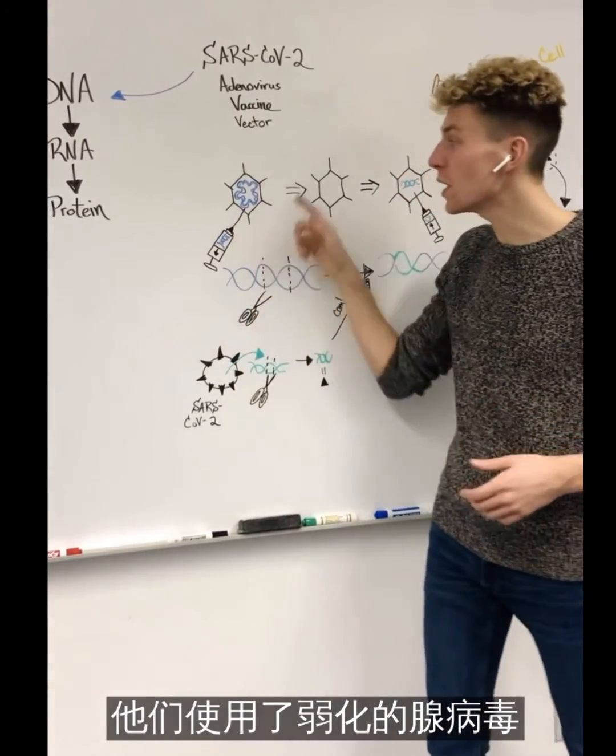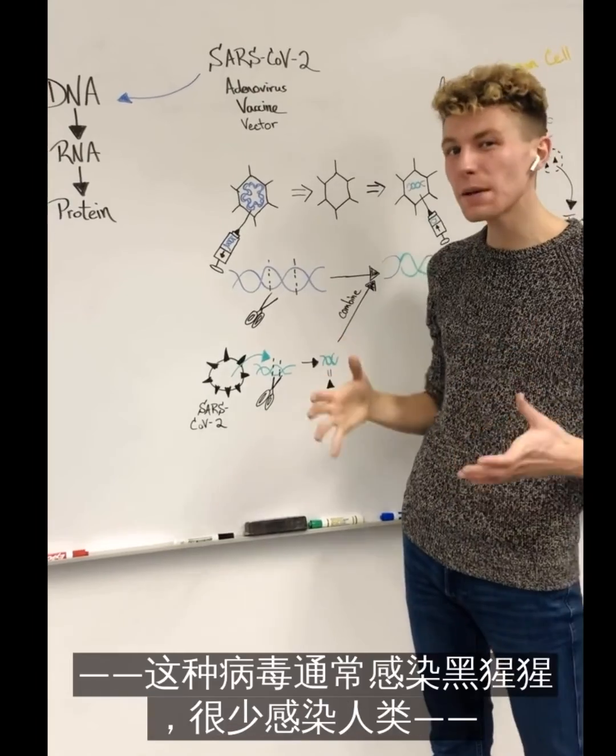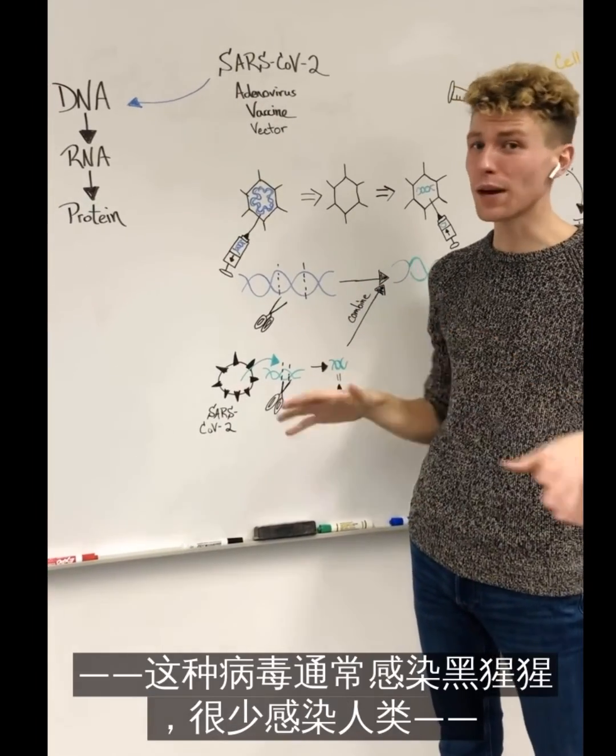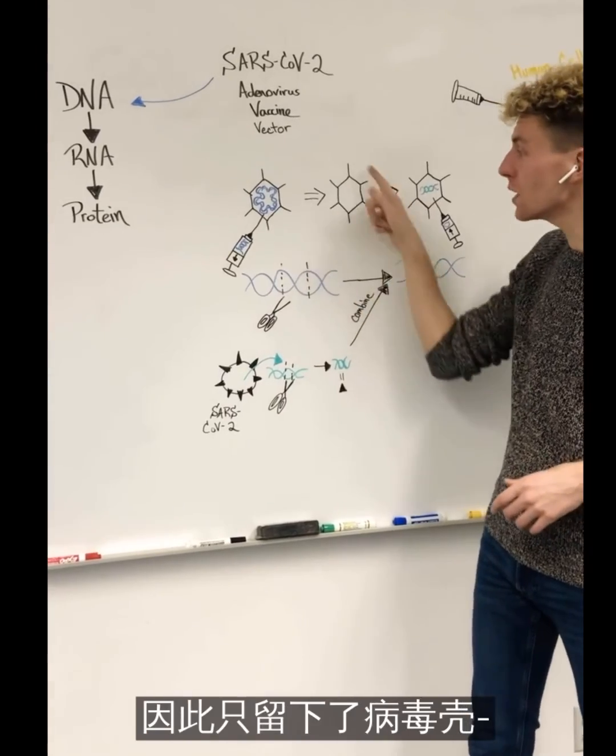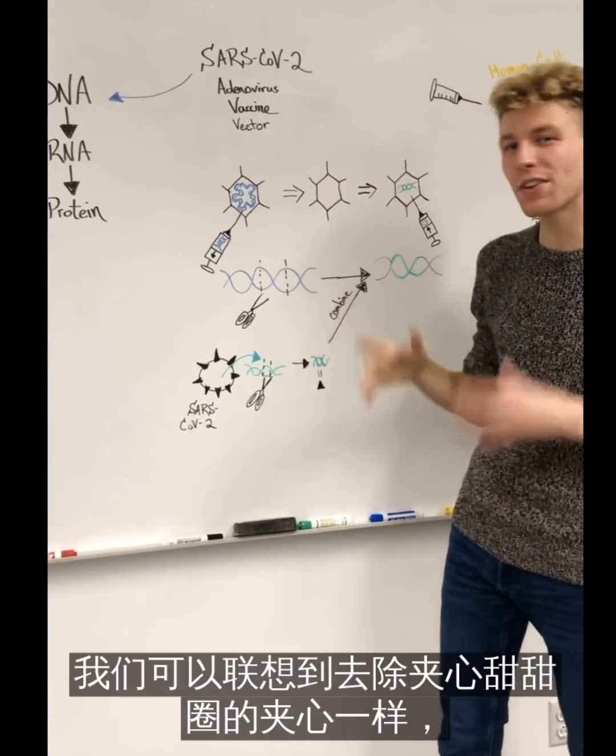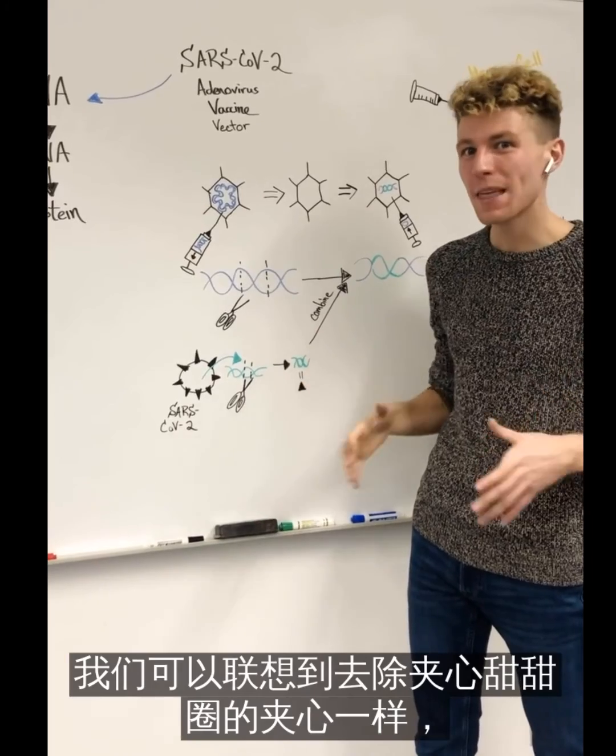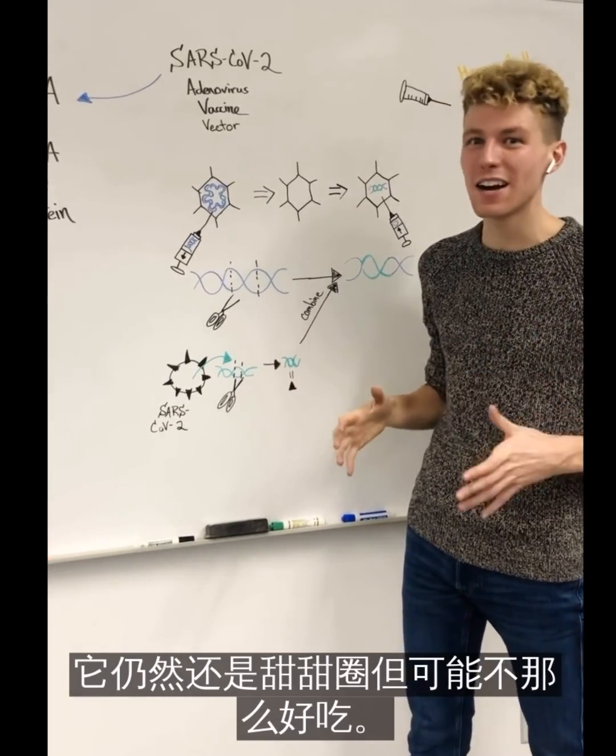What they did was they used a weakened Adenovirus that typically infects chimpanzees and rarely infects humans, removed the genetic material so they're only left with a viral shell. You can think of this like removing the insides of a filled donut. It's still there, but probably not as good.